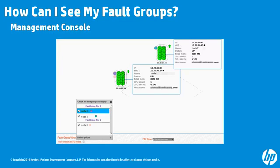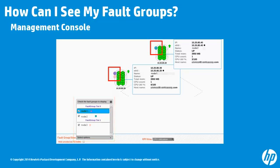You can view node to Fault Group relationships using Management Console. Here you can also view which Fault Group nodes you want to display and hide others. When you display a Fault Group, a colored bubble appears to the left of each node. This uniquely colored bubble indicates that the selected node is in a Fault Group. In this image, each node is in its own Fault Group and each node has a colored bubble assigned to it.